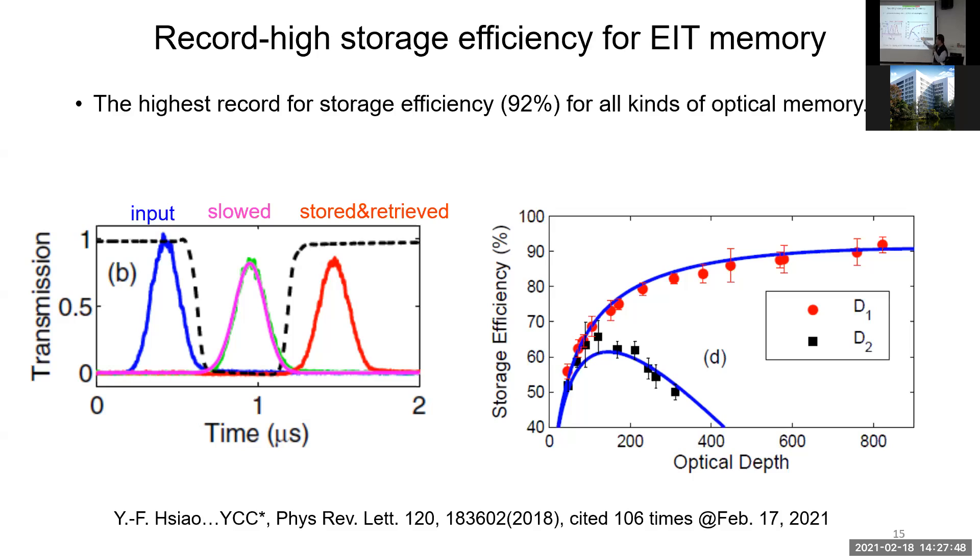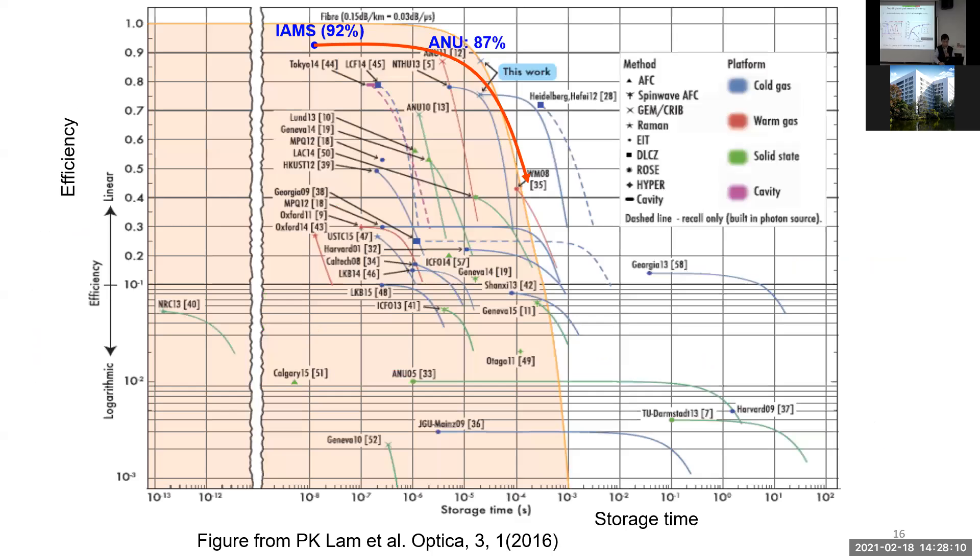Based on that result, we can obtain a very high storage efficiency. Here shows the input probe pulse, the slow light pulse, and store and retrieval. Storage efficiency, we can get up to 92%. You can see we use cesium D1 and D2 light to implement this EIT memory, and the behaviors are quite different. For D2 light at the high optical depth, the efficiency actually goes down. I will talk about that more later. Up to date, this is the highest efficiency among all kinds of protocol for EIT, for optical memory.